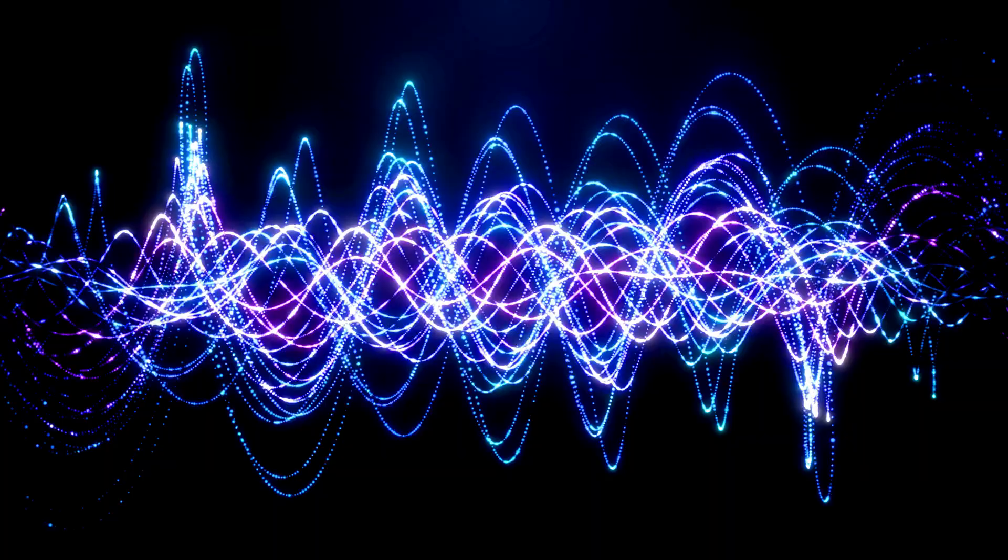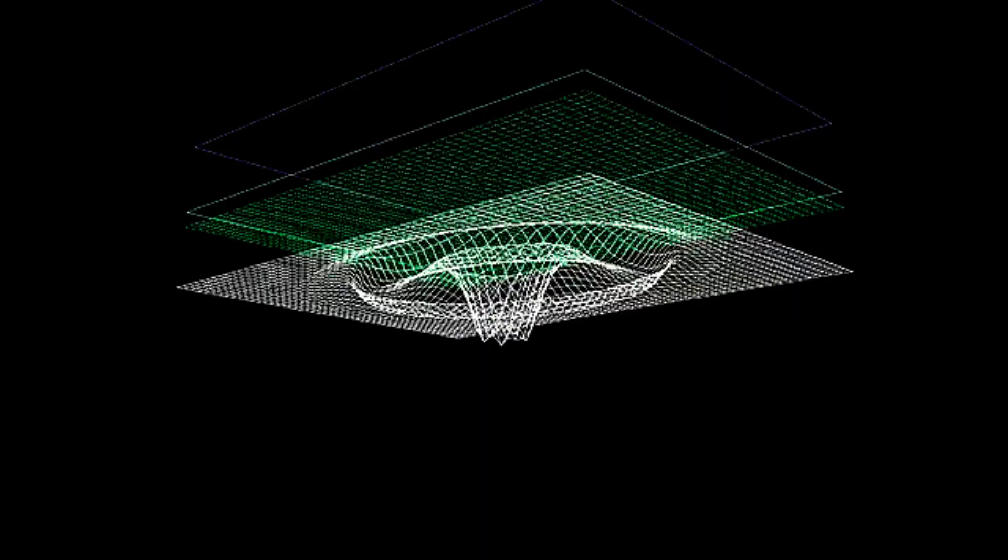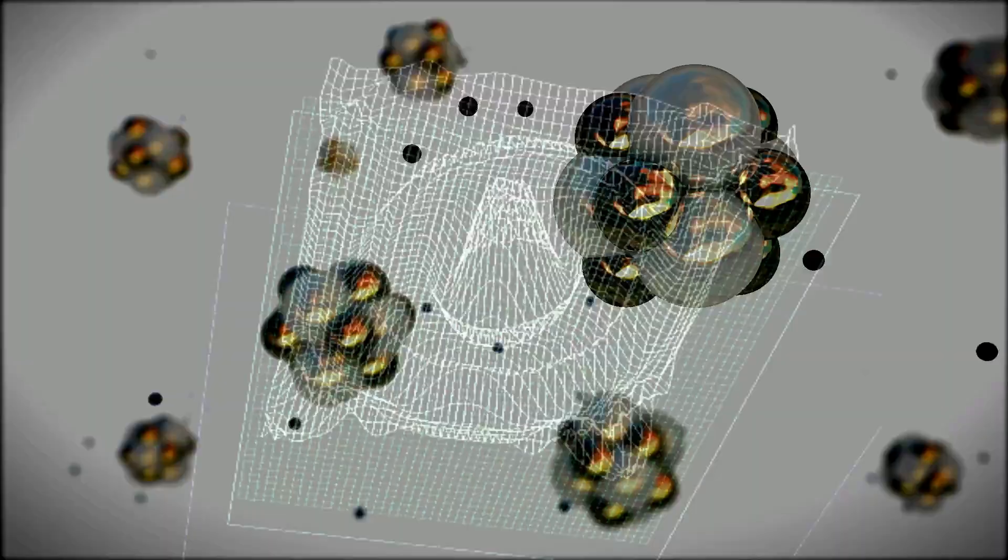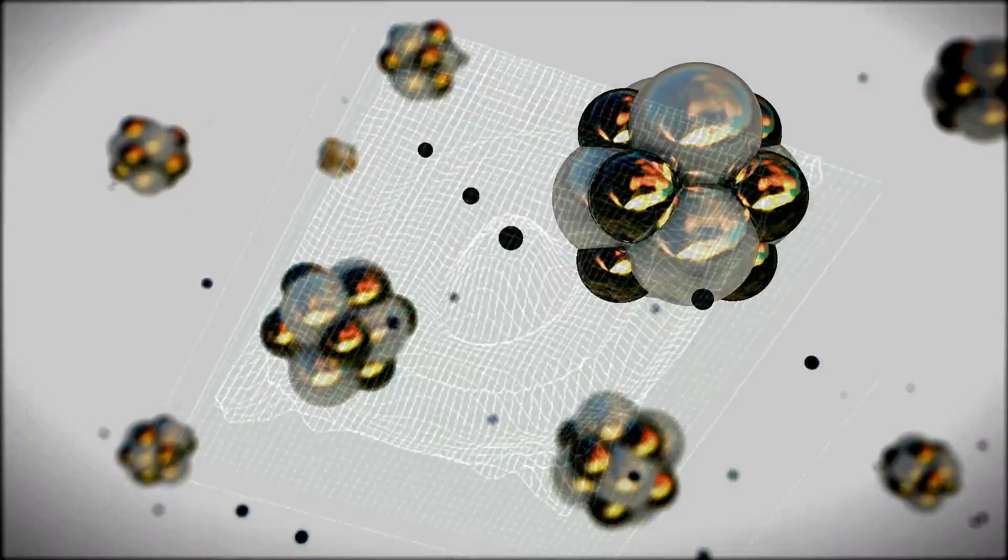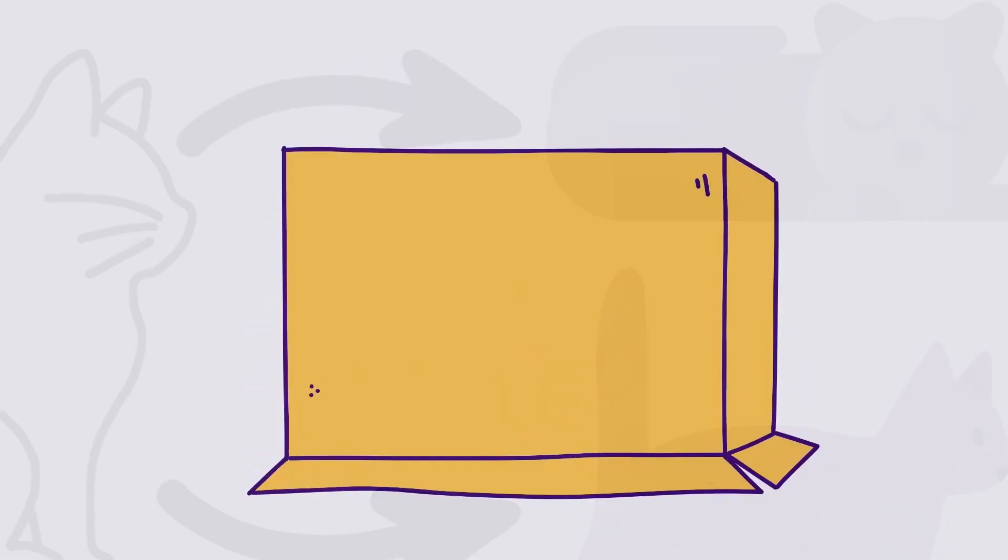However, once observed, the atom's wave function collapses into one of the two possible states. Similarly, in the case of Schrödinger's cat, the cat's fate is also in superposition until it is observed. This means that until the box is opened and the cat is observed, it is both alive and dead at the same time.